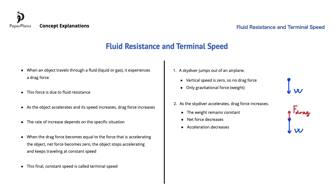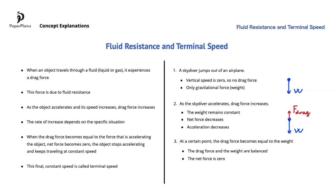The closer the skydiver gets to the ground, the larger the drag force becomes. At a certain point, the drag force becomes equal to the weight. When this happens, the drag force and the weight are balanced, the net force is zero, and the skydiver stops accelerating and reaches terminal speed. From this moment on, until the skydiver opens her parachute, the free body diagram for the situation looks like this.